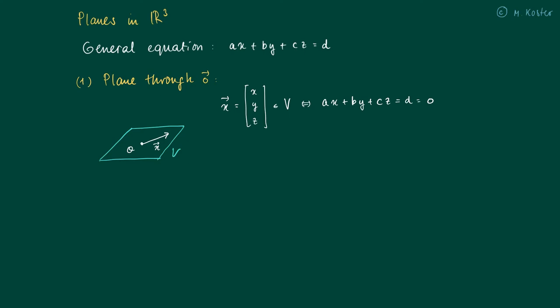Again, like we did for lines, we may use a different description. We may write ax + by + cz as a product of two vectors: the vector (x, y, z) times the vector (a, b, c). And it should equal 0. Again, this is called the normal of the plane V.